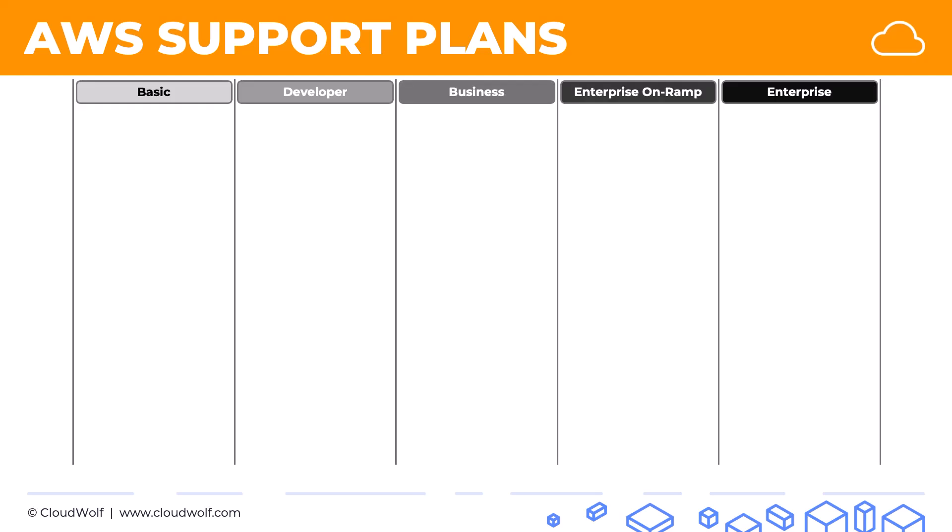In AWS there are five support plans ranging from basic to enterprise, and as you go from left to right they become more expensive but also you get more features. Unfortunately, you have to learn these off by heart and know them for the exam. Hopefully this image will help you remember them in a structured way.